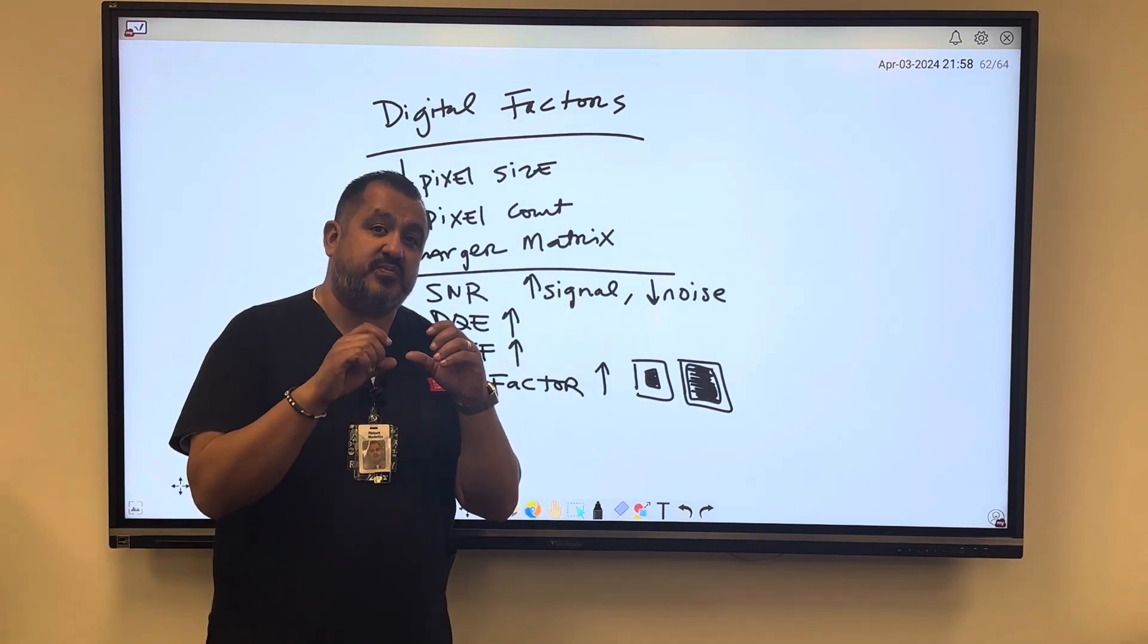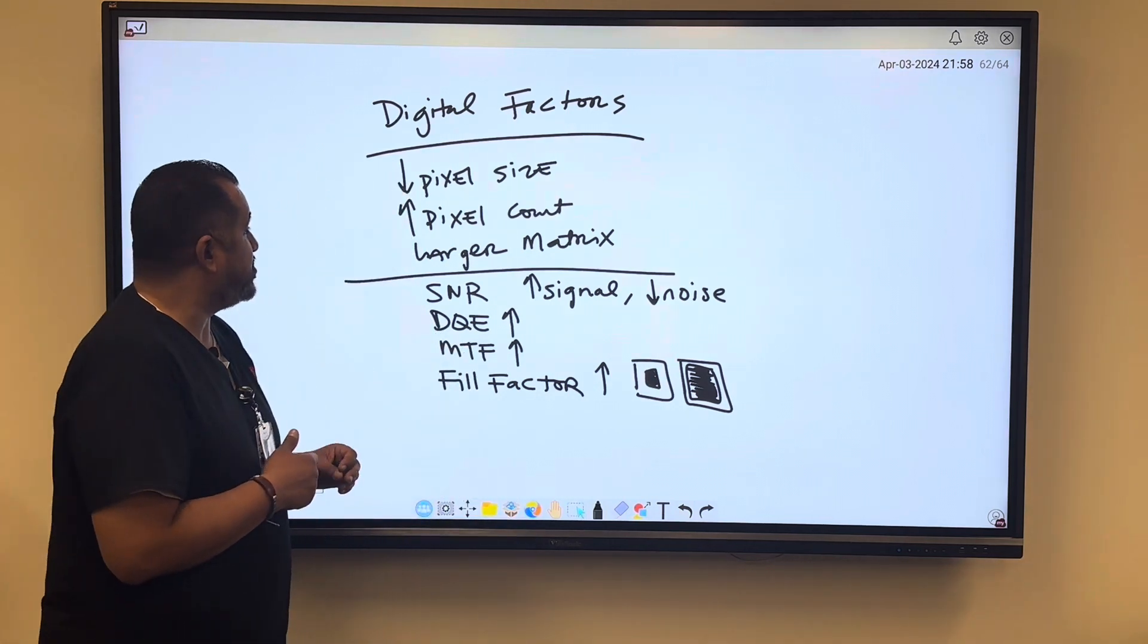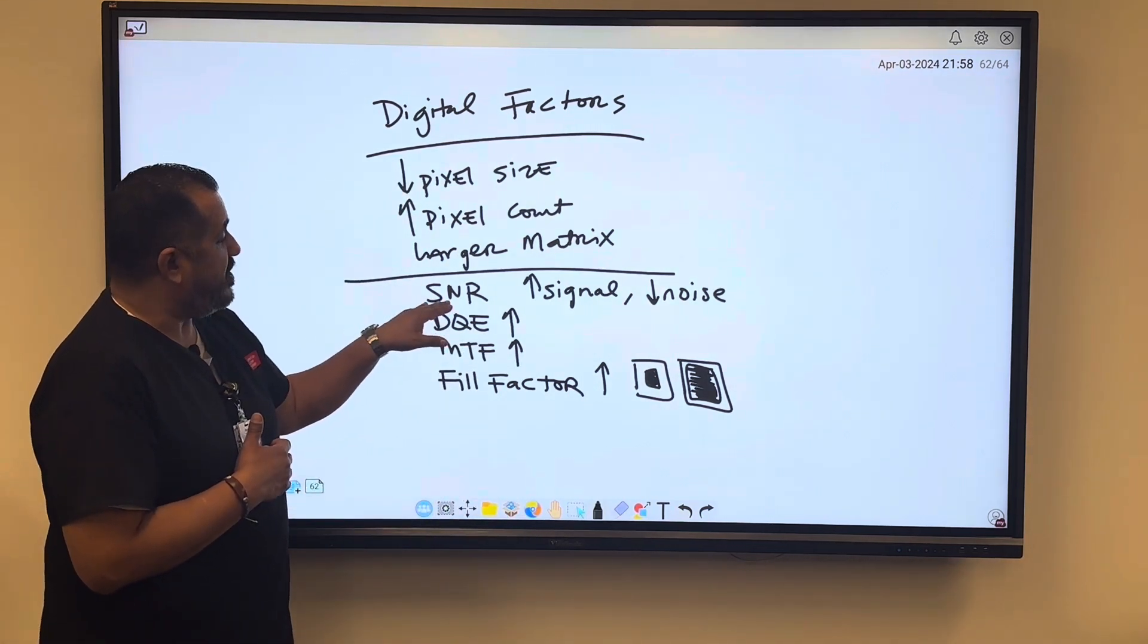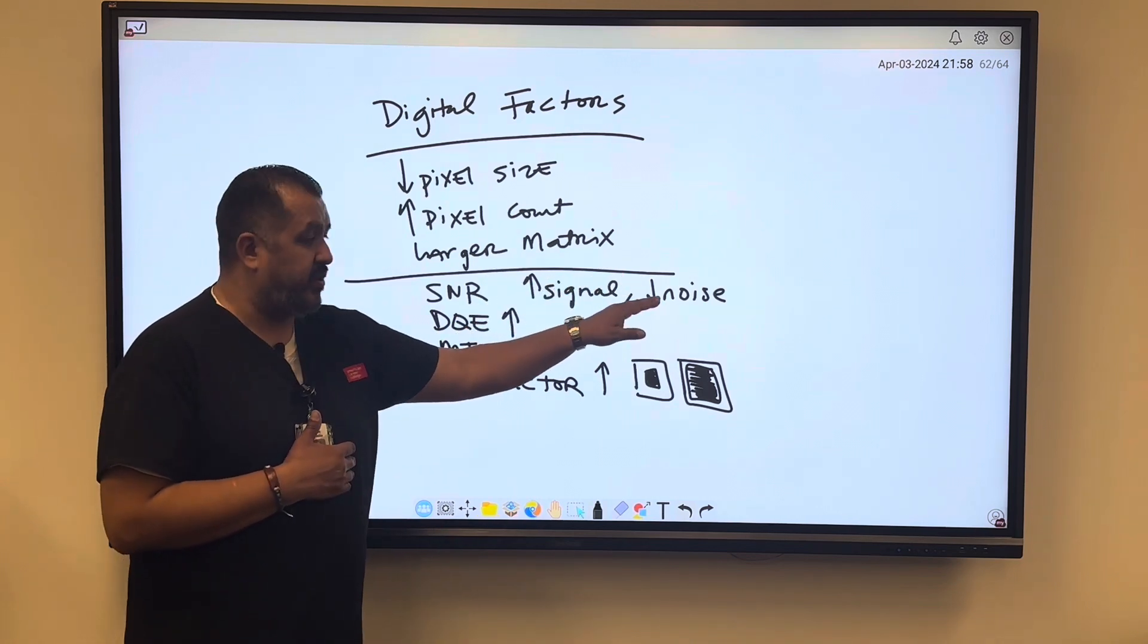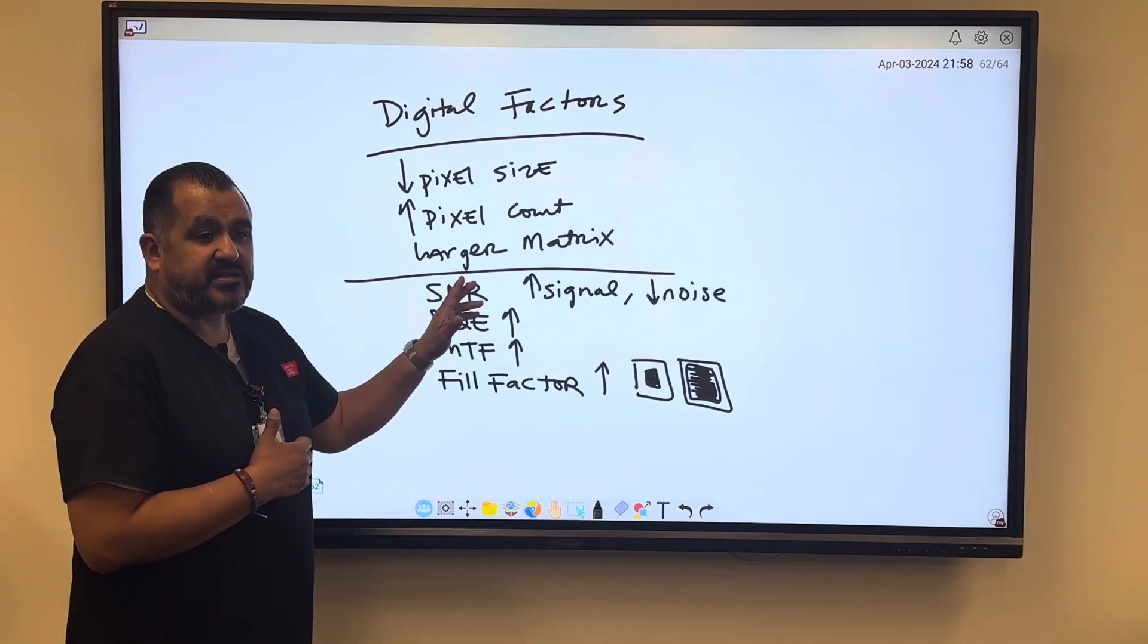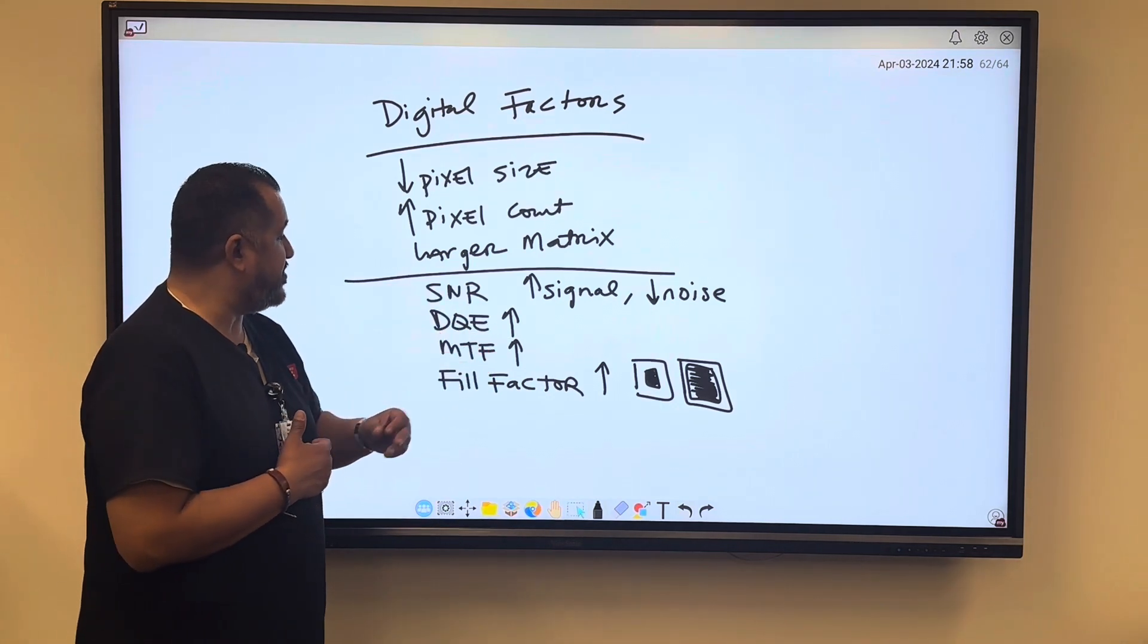We talked about SNR, signal to noise ratio. You want more signal, you want lower noise. You want to make sure that you have an increase of DQE, detective quantum efficiency, you have an increase of modulation transfer function or modular transfer function.